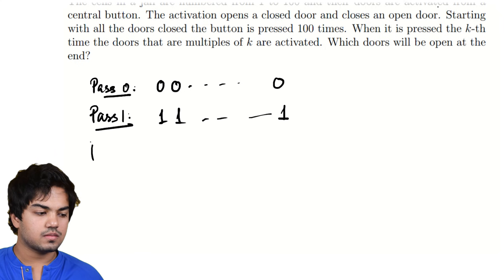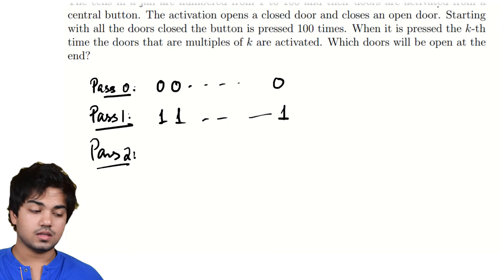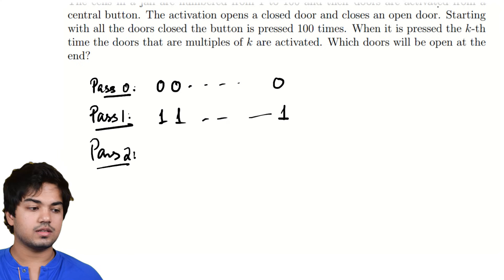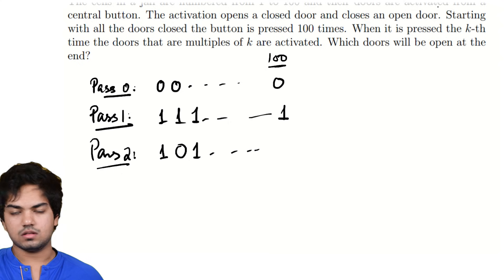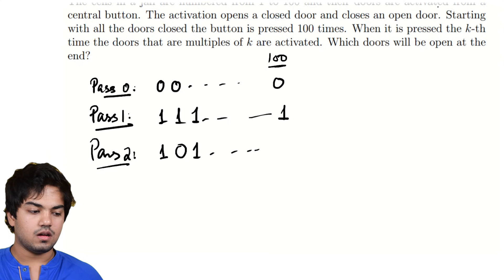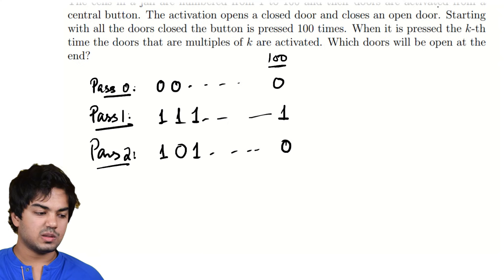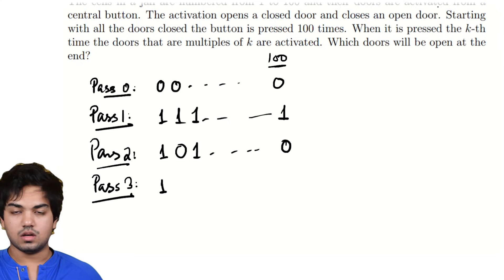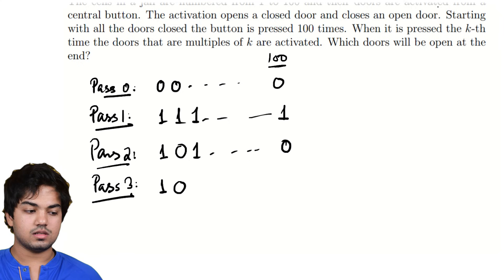Pass one, all multiples of one are flipped. So that means all numbers, everyone is flipped. Pass two, all multiples of two are flipped. So all the even numbers get flipped. One, which is, it will stay the same. This one will flip to zero. This one will stay just as it is, and so on. Since the 100th number is even, you know, 100 is even, the last bit will also flip. Similarly, pass three, one will stay a one, zero will, this zero will stay zero, but this one will flip because it's a multiple of three.